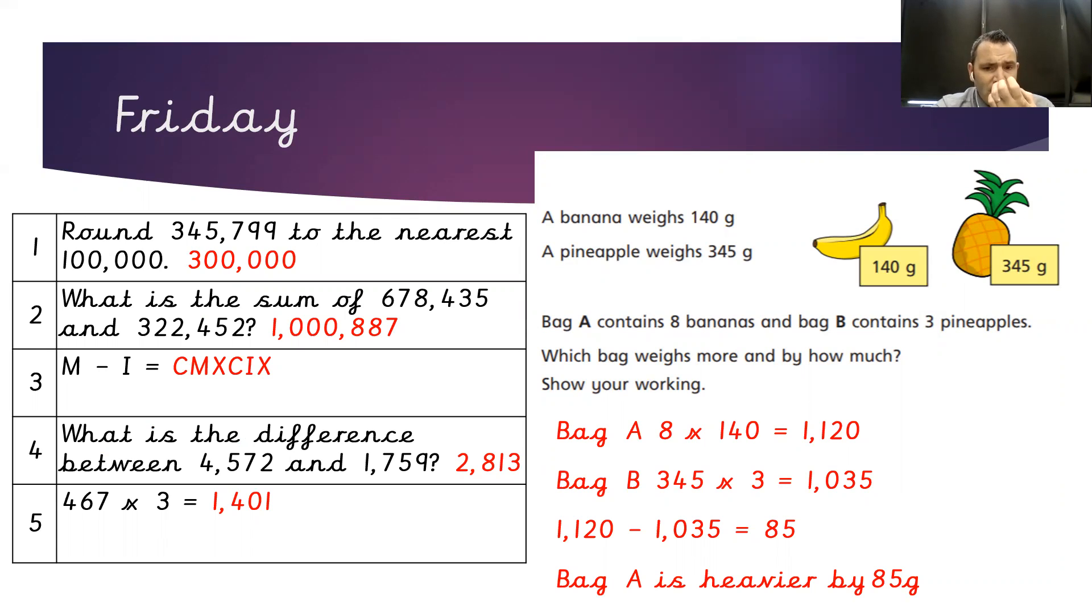To work out the difference between the two bags, we need to do 1,120 minus 1,035, which gives us an answer of 85 grams. So bag A is heavier by 85 grams.